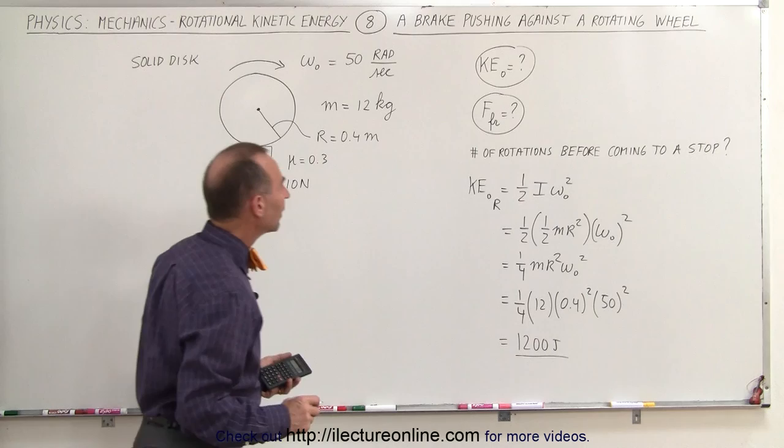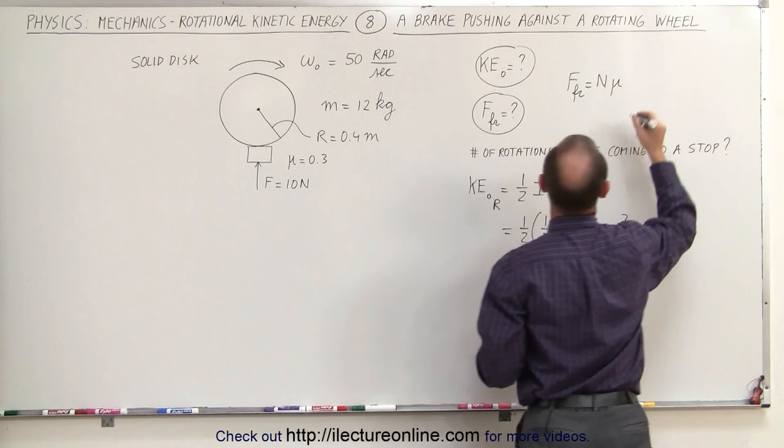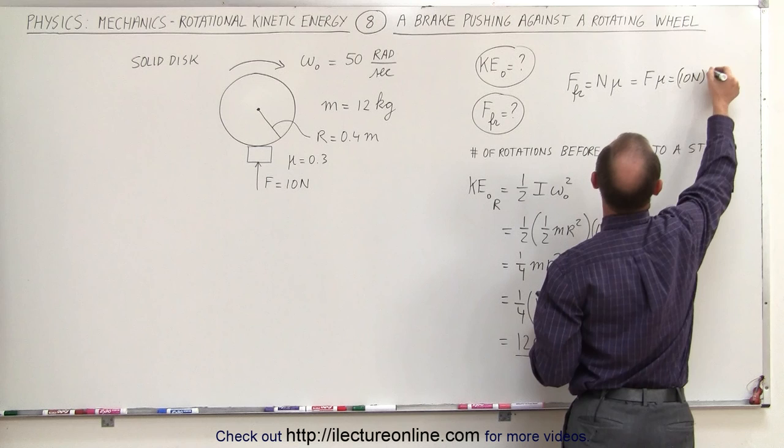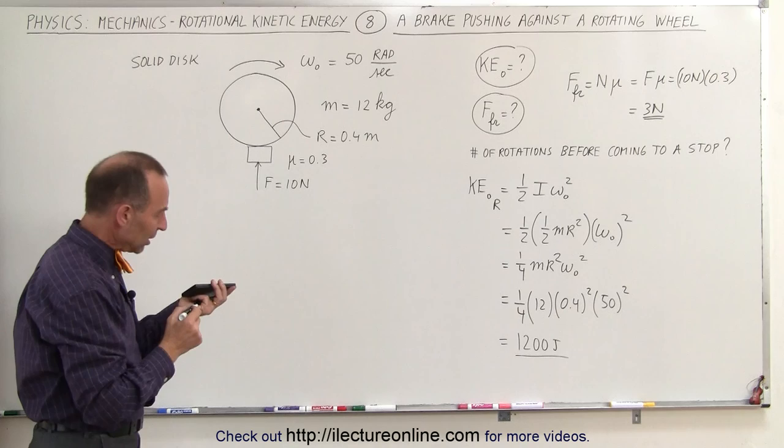Now let's calculate the friction force. By definition, friction force always equals the normal force times mu. In this case the normal force is 10 newtons, so this equals 10 newtons times the coefficient of friction 0.3, which equals 3 newtons. That's the friction force applied to the rotating wheel.